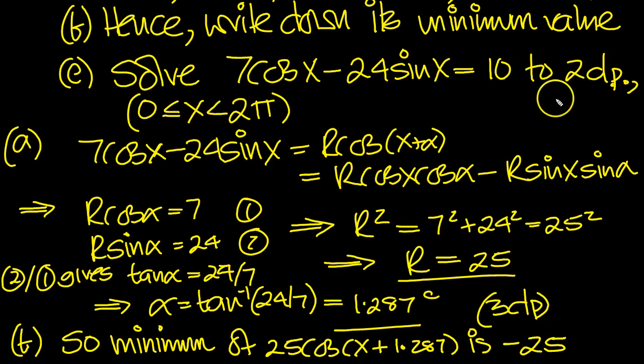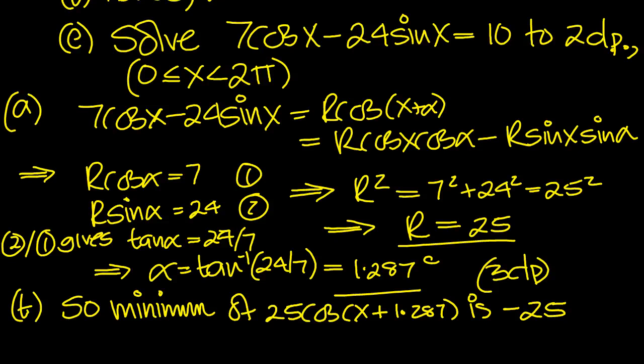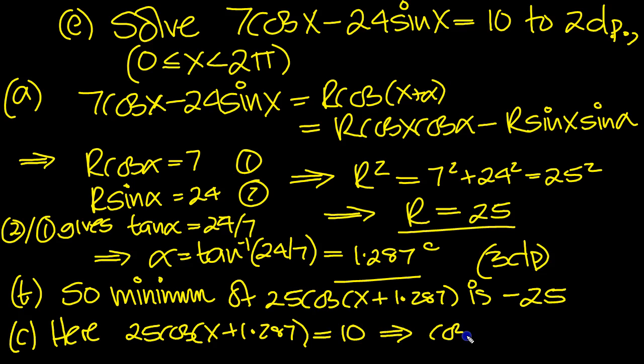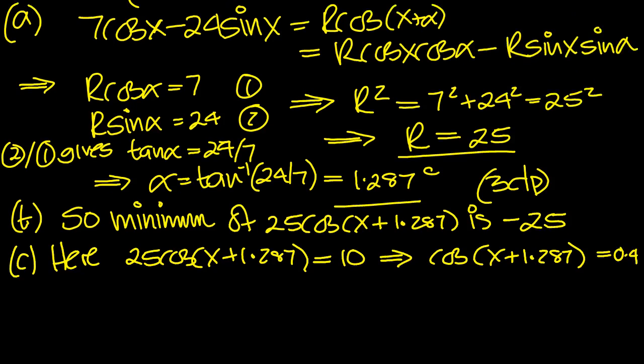Solve this trig equation equals 10 to 2 decimal places for x between 0 and 2π. So here, we can write down 25cos(x + 1.287) equals 10. So that tells us that cos(x + 1.287) equals 10 over 25, which is 2/5 or 0.4. So there's our trig equation for part C. So let's have a look at this, draw a circle.